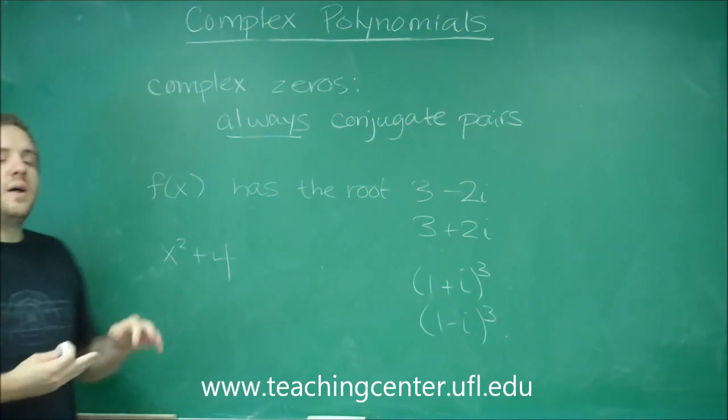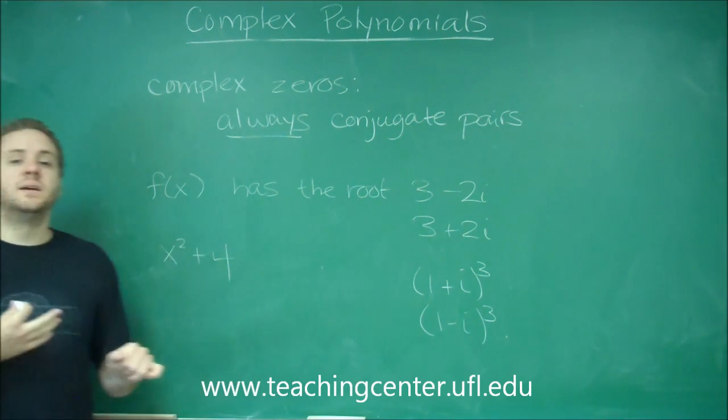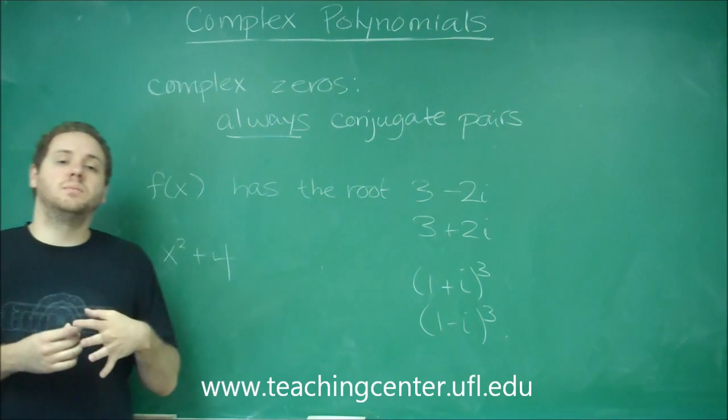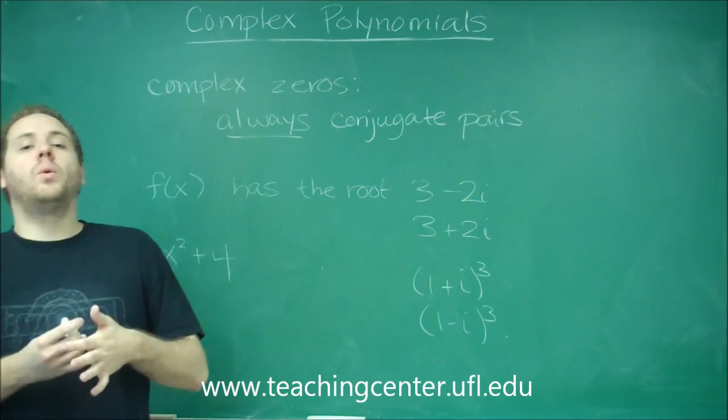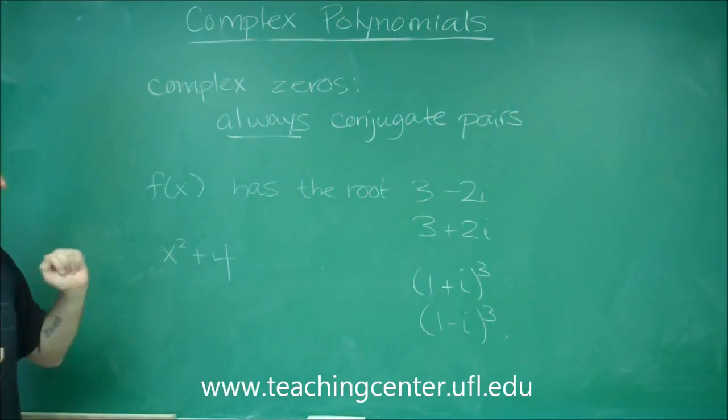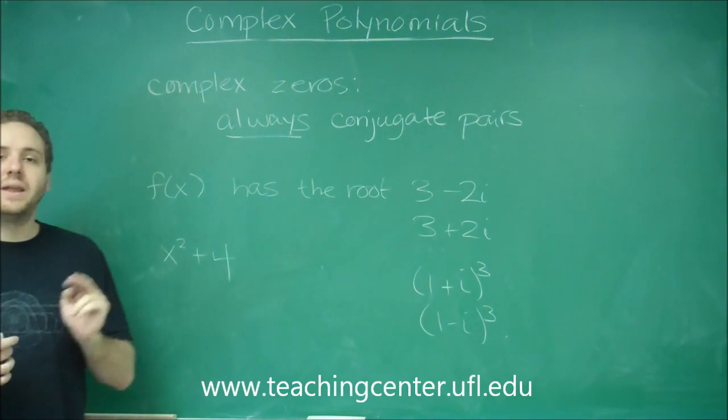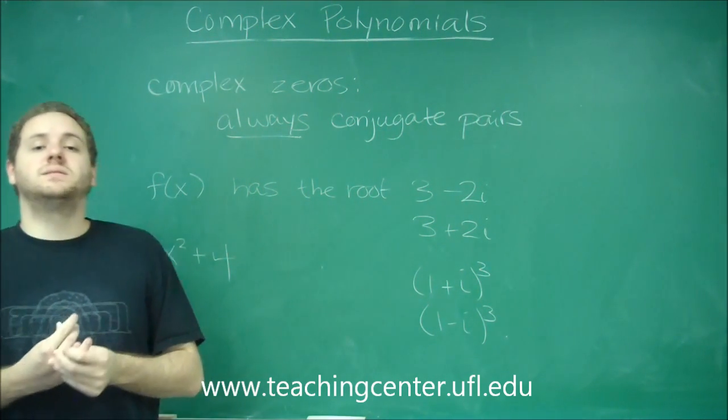It actually has two, and they're both in the complex plane. So now that we're dealing with complex numbers, we can say that a polynomial always has as many roots as its degree. This is a second degree polynomial. It has two roots. It just so happens that these are complex.